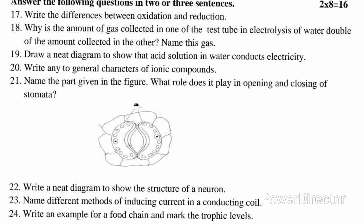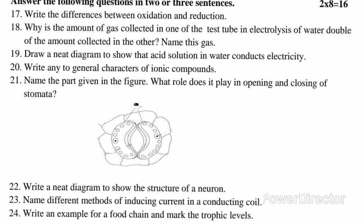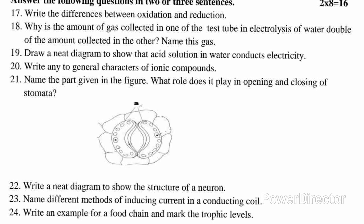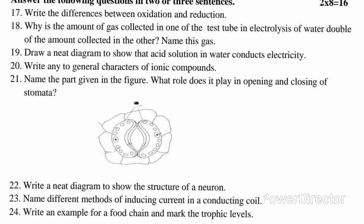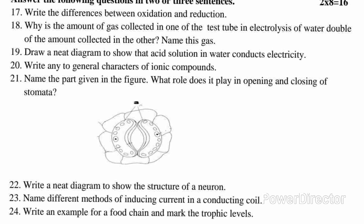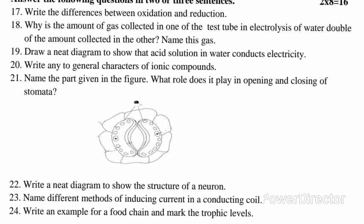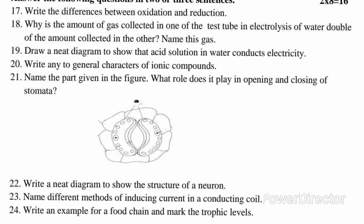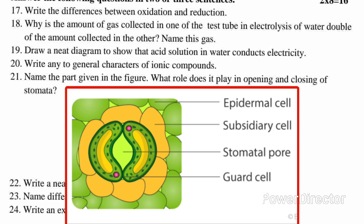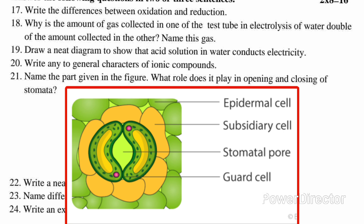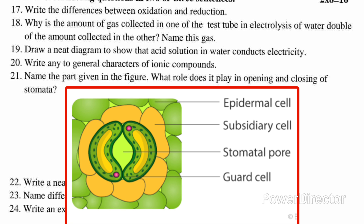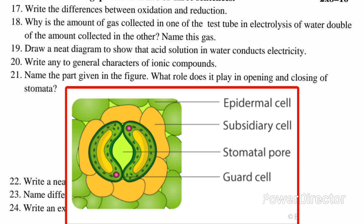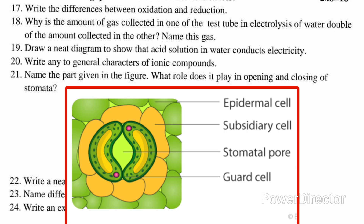Question 20: Write any two general characters of ionic compounds. Answer: Ionic compounds have high melting points and boiling points. They conduct electricity in their molten state. Question 21: The part shown in the figure is guard cells. The guard cells swell when water flows into them, causing the stomatal pore to open. Similarly, the pore closes if the guard cells shrink.